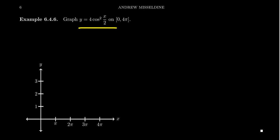In this video, we're going to graph the function y equals 4 cosine squared of x over 2, and we're going to do this on the domain 0 to 4π.